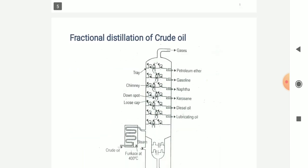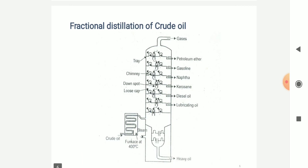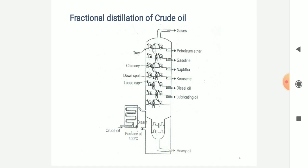The fractional distillation of the crude oil is shown on screen — the trays are fitted in the equipment and the chimney caps are at the adjacent side. The loose caps and downspouts are there with the trays, while petroleum ether, gasoline, naphthalene, kerosene, and diesel oil fractions are in sequential order. The lubricating oil separator is there. By filtering through all these stages, the heavy crude oil gets deposited into the container.